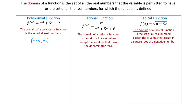Now let's talk about the domain of the rational function f of x equals x squared plus 5 over x squared plus 5x plus 6. A rational function is a function where the numerator is a polynomial and the denominator is also a polynomial. The domain of a rational function is the set of all real numbers except the x values that make the denominator 0.